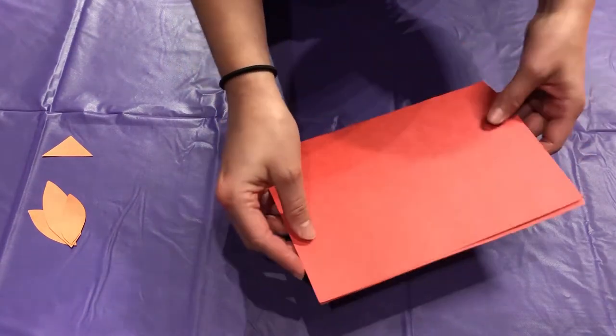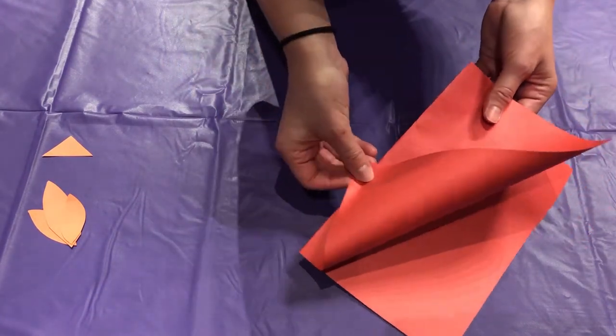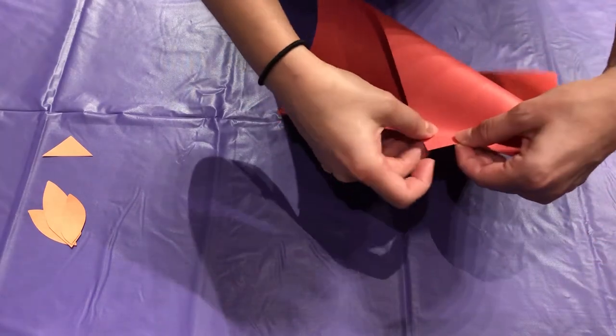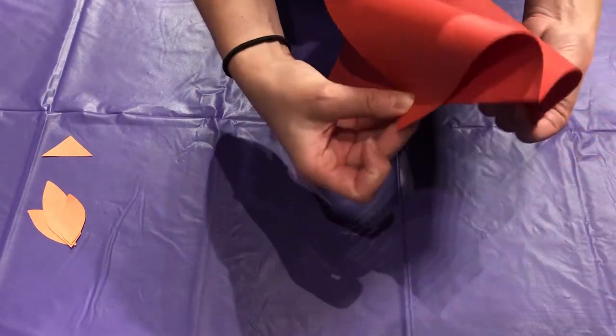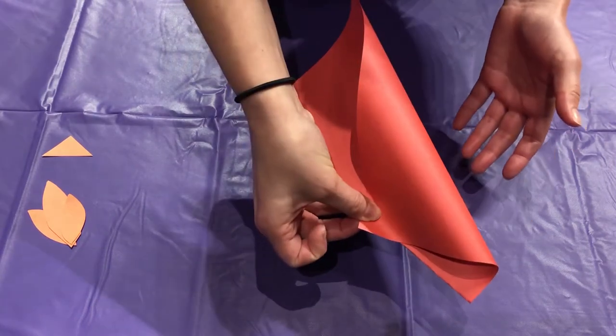And then you're just going to take the corner and fold it over so that it kind of goes over the edge there. And you're gonna do the same to this side. All right so it should look just like that.